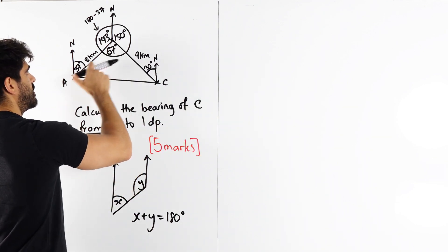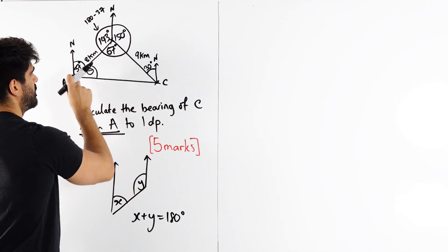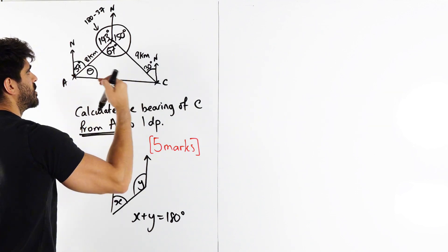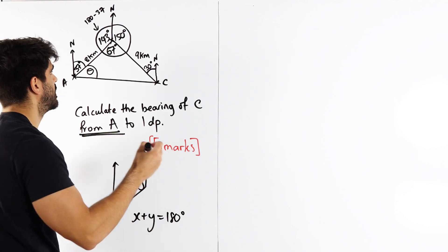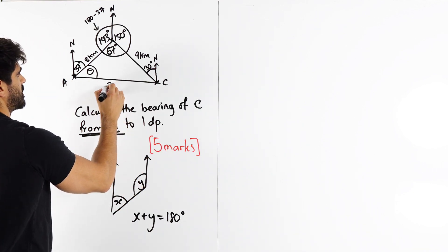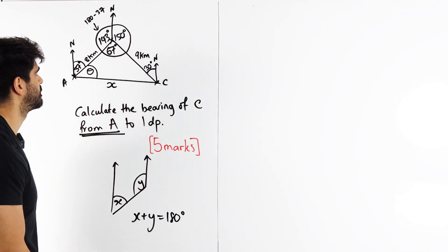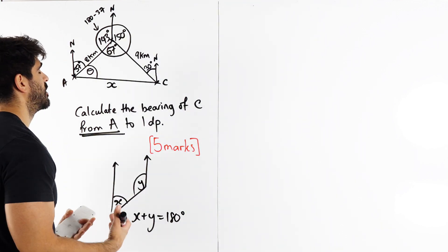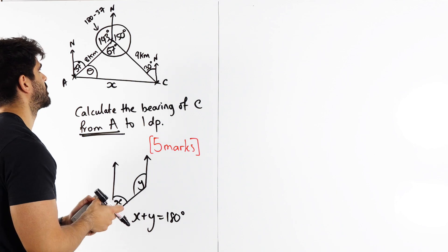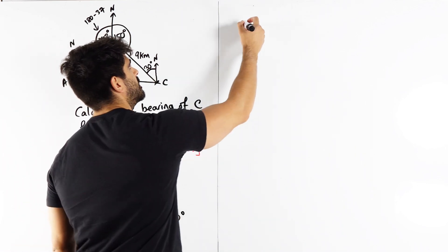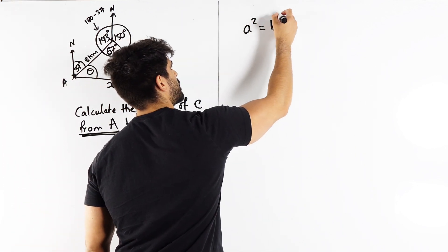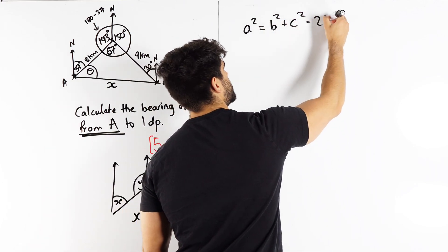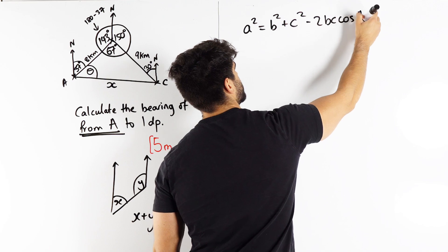So I can't use the sine rule, guys, because this pairing has an unknown, this pairing has an unknown, and this pairing has an unknown. So I'm going to go back to what I said originally is we need to work out this length first. Let's call it x. All right, so this is a tough question. We need to use the cosine rule, and then probably use the sine rule after. What is the cosine rule? a squared is b squared plus c squared, so it starts off with Pythagoras' theorem, minus 2bc cosine of the angle.